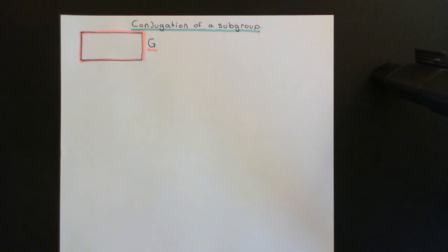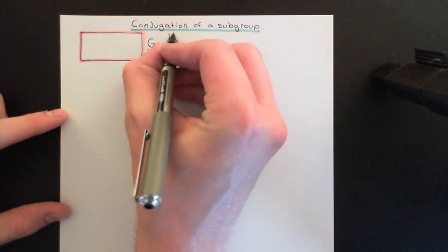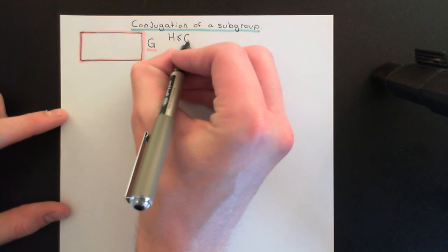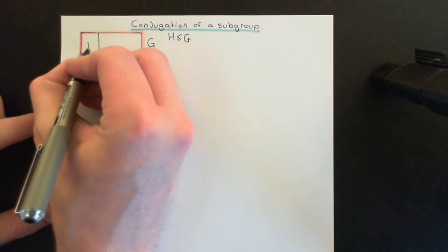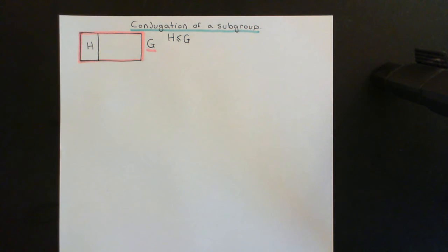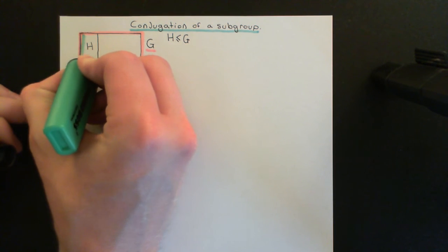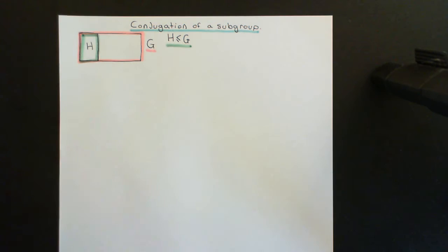The next thing that we need is some subgroup of the group capital G. So let's say that capital H is going to be a subgroup of capital G. I'll now mark capital H on here — this subportion of capital G, this subset, is going to represent our subgroup capital H, and I'll outline capital H here in green.